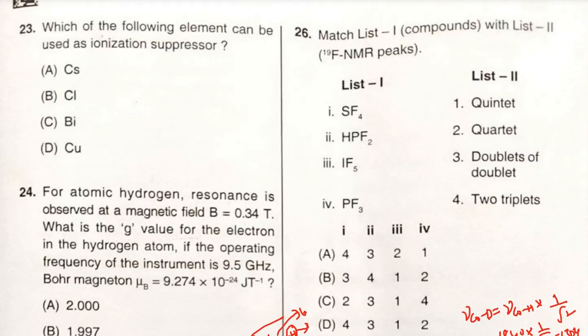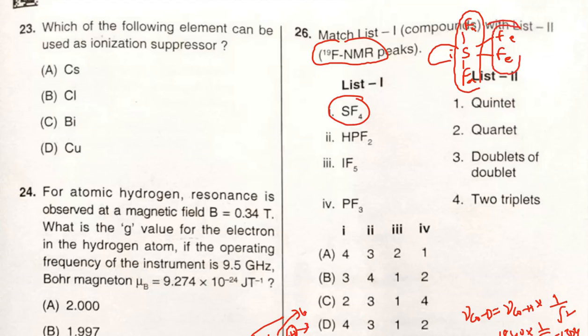Match list one with list two. In ¹⁹F NMR: SF₄ - the electron geometry, two fluorines are axial fluorines and two fluorines are equatorial fluorines. Among axial fluorines, they will experience different chemical environment from the two equatorial fluorines. And the equatorial fluorines experience different chemical environment from the axial fluorines. So we get two triplets - one triplet with respect to axial fluorines, one triplet with respect to equatorial fluorines. So total two triplets can be observed. One matches with four, so option must be between A and D only.